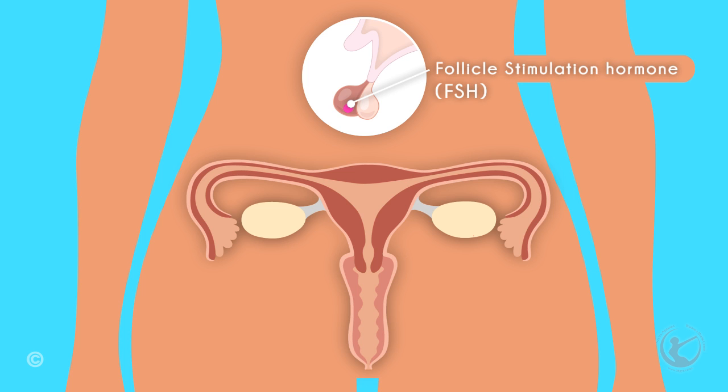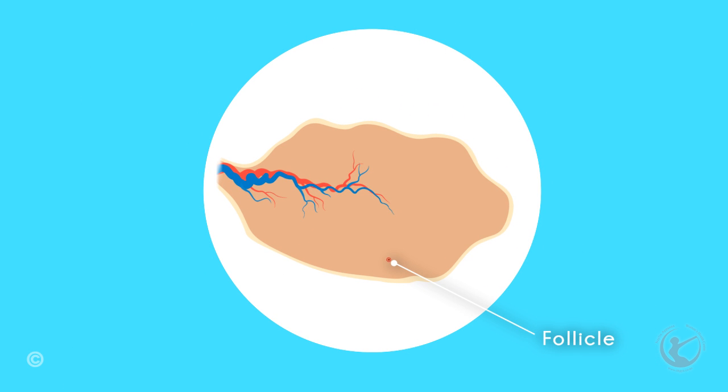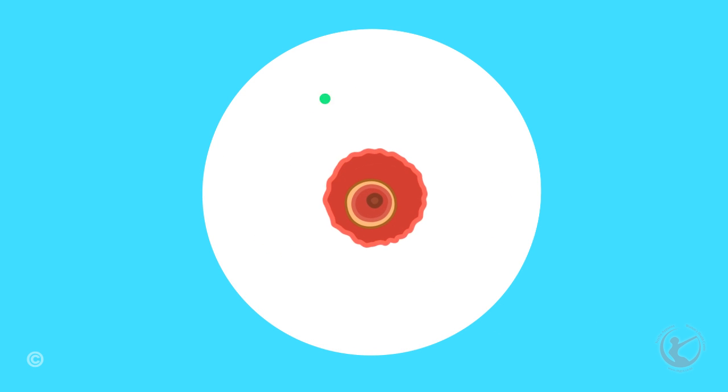FSH, or follicle-stimulating hormone, is released by the anterior pituitary gland. This causes a follicle in the ovary to grow. As that follicle grows, it releases more and more estrogen.